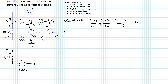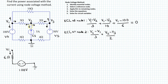Applying KCL at node 2: the branch current through the 3-ohm resistor is (V2 − V1) / 3, and through the 2-ohm resistor is (V2 − V3) / 2. For the branch containing the current source, the assumed direction is opposite to the actual current direction, so this branch current contributes −5, and the sum equals zero.